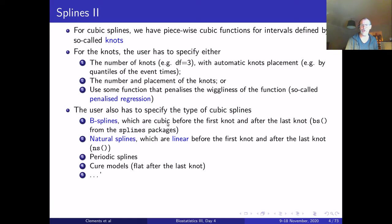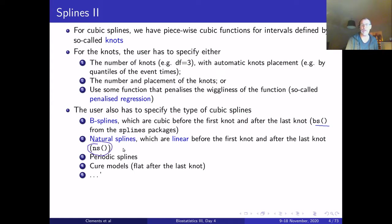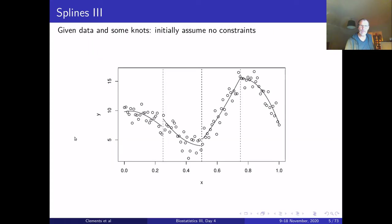The user also specifies the type of cubic splines. B-splines are cubic before and after the first knot and are implemented in the bs() function from the splines package. Natural splines are linear before the first knot and linear after the last knot, implemented in the ns() function. There are other splines including periodic splines and cure models, but we'll mainly use natural splines.